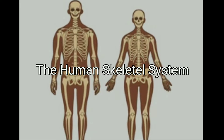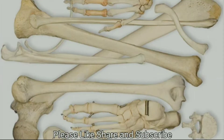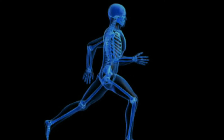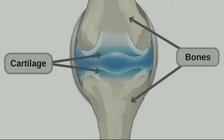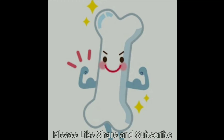All the bones in our body are not of the same shape — every bone is different. All the bones together form a framework or skeleton, which gives a shape to the body. Bones are hard and not flexible.